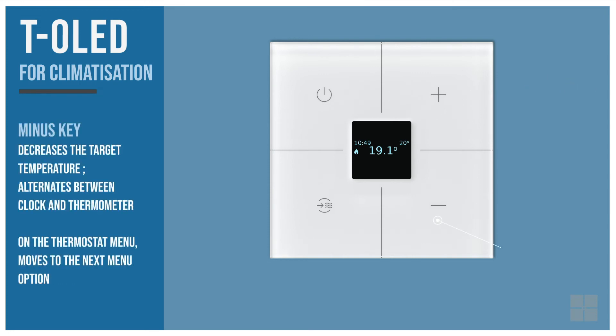The minus key decreases the target temperature if the thermostat is on, and also alternates between the clock and thermometer shown on the display when the thermostat is off. On the thermostat menu, it moves to the next menu option.